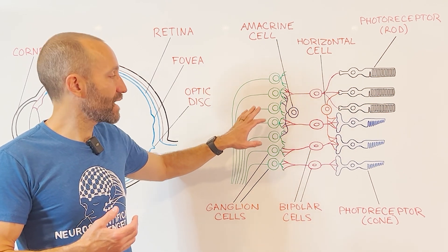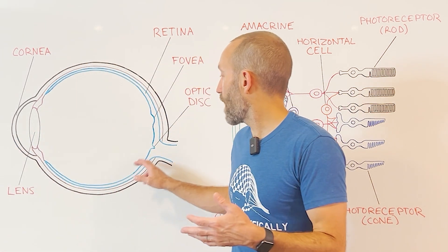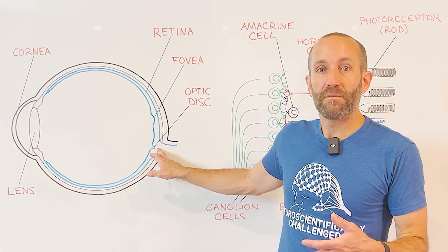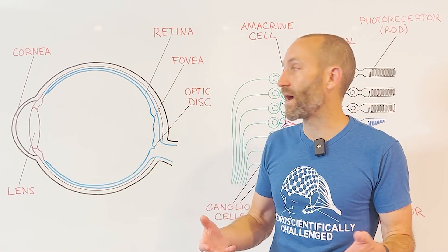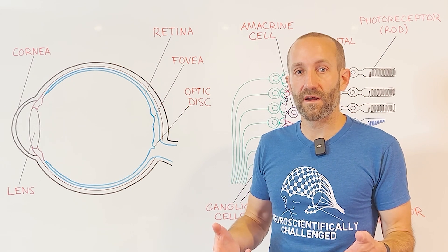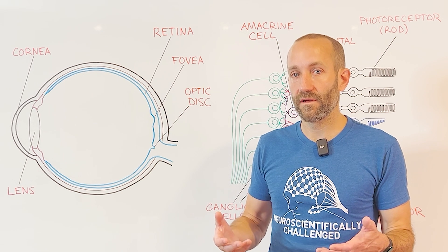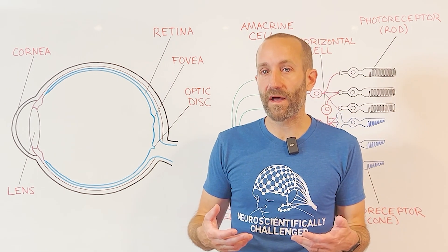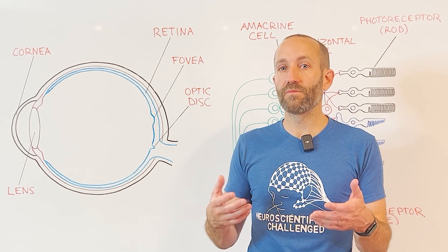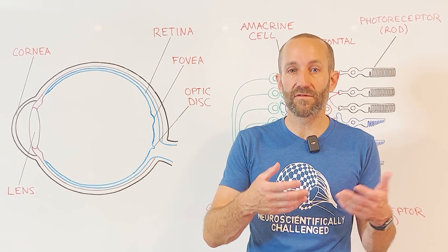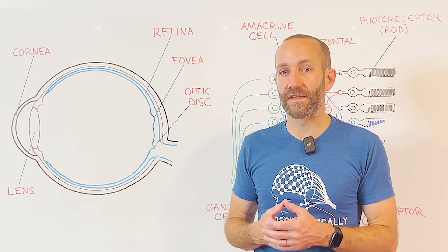Visual information is carried out of the eye by the ganglion cells, whose axons leave the eye in a bundle at a region called the optic disc. Because the optic disc is where ganglion cells exit the eye, there are no photoreceptors there, creating a small region where we don't receive any visual information — a blind spot. Amazingly, we don't notice this blind spot because the brain fills it in with information from other photoreceptors.